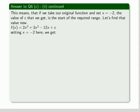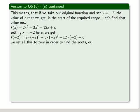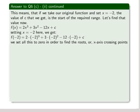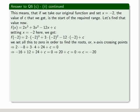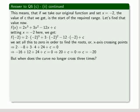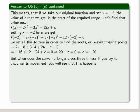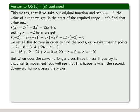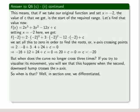Let's find that value now. So we set x equals minus 2, and plugging in the values, we set it to zero, of course, which represents the x-axis crossing points, and it simplifies to c equals minus 20. But when does our curve no longer cross three times? If you try to visualize its movement, you will see that this happens when the second, or downward hump, crosses the x-axis. So when is that?